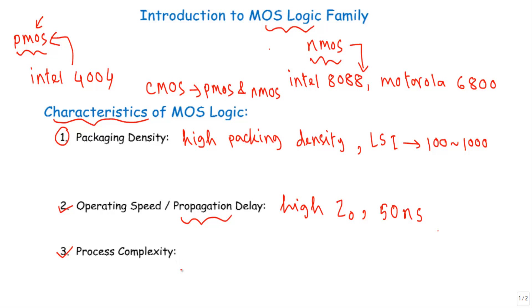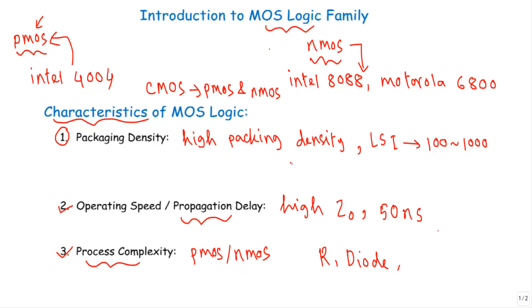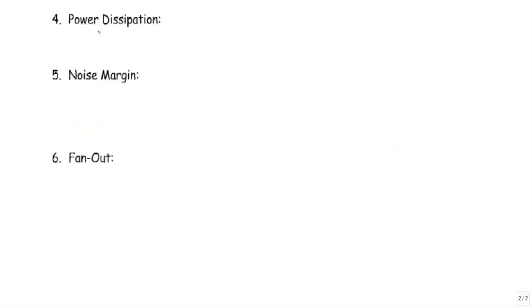The third characteristic is process complexity, which indicates how many elements we have to fabricate in a single logic circuit. MOS logic circuits use only PMOS or NMOS for logical operation — no resistors, diodes, or capacitors are needed. Therefore, it is easier to fabricate MOS logic circuits.